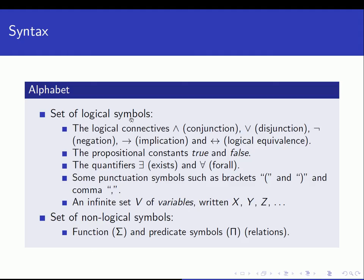For the logical symbols, those are symbols that computer science students should know quite well. We have the logical connectives like conjunction, or 'and'; disjunction, or 'or'; negation; implication; and logical equivalence. We also have propositional constants true and false, and quantifiers — 'exists' and 'for all'.